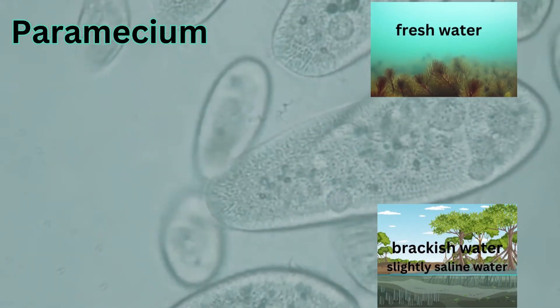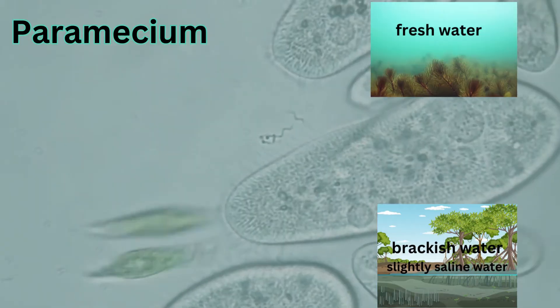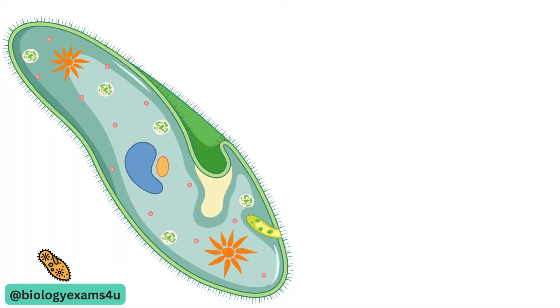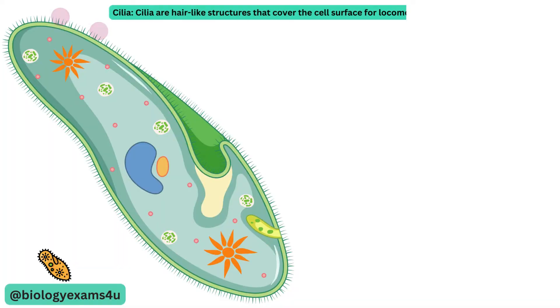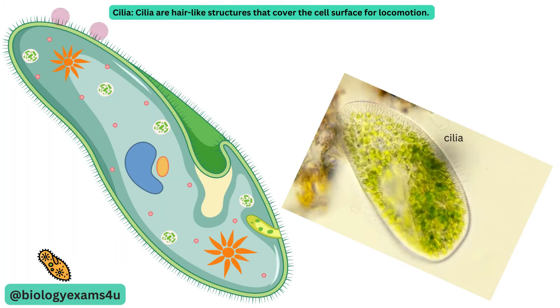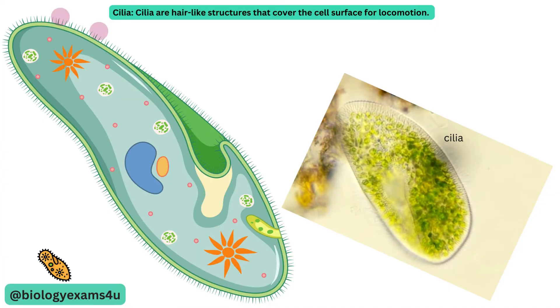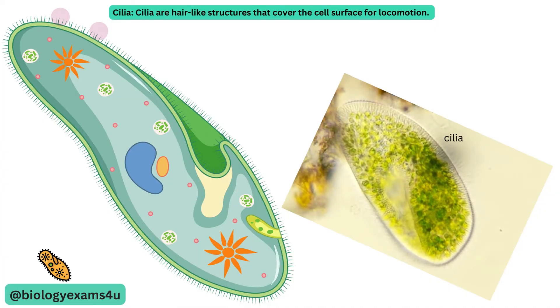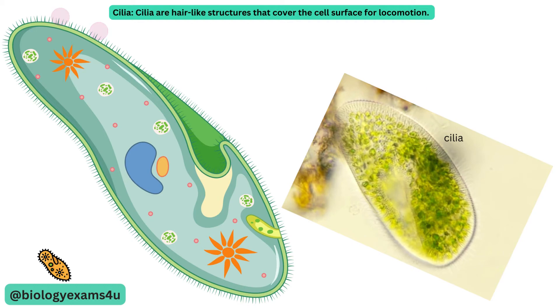Let us understand the cell structure of paramecium. Cilia are hair-like structures that cover the cell's surface for locomotion. They beat rhythmically to propel the cell through the water and to bring food particles into the mouth.